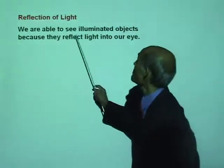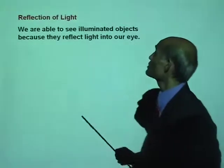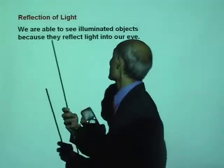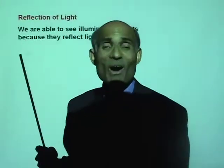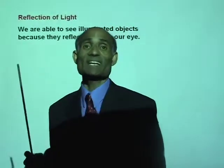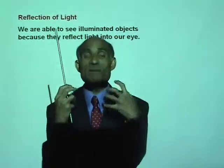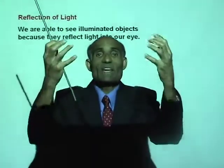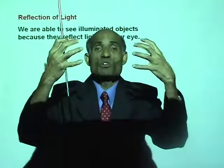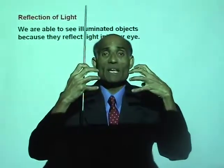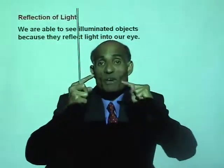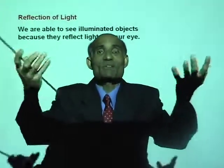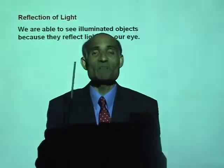We are able to see illuminated objects because they reflect light into our eye. As I was telling you, you are able to see me because when light falls on me, light gets reflected onto the camera and that's why you are able to see me.